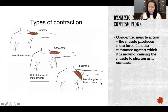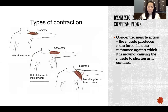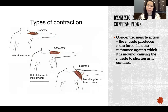If the muscle is getting shorter, then it's a concentric muscle action or concentric muscle contraction. In that case, the muscle is producing force and the muscle is shortening as it's producing force.